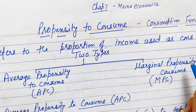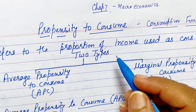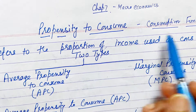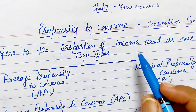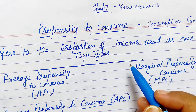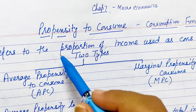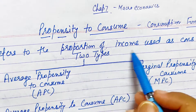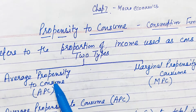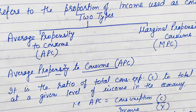Good morning students. In the previous video lecture we have discussed about the consumption function and saving function of the same chapter. Now we are going to discuss about the propensity to consume. It is also the same consumption function — how much income is to be spent on consumption in the economy. So this propensity to consume shows the proportion of income that is used as the consumption expenditure, and it is of two types.